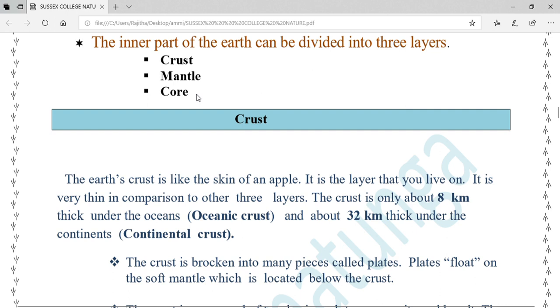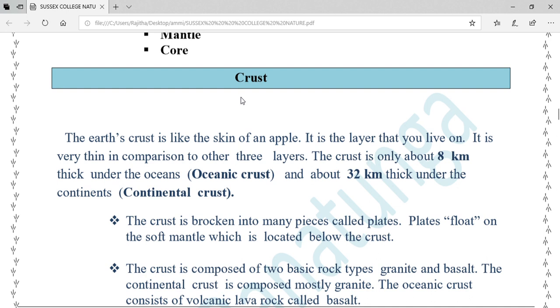The middle part of the earth can be divided into three layers: crust, mantle, and core. The core can be divided into two: outer core and inner core. The crust is the outermost layer of the earth. The earth's crust is like the skin of an apple. It's the layer that you live on. It is very thin in comparison to other three layers.